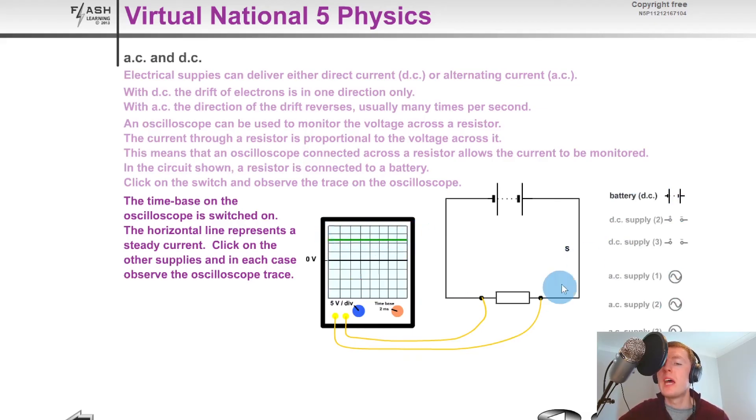However, if I open the switch and replace the DC supply with an AC supply this time, then if I close the switch, you'll see I get a wave pattern on the oscilloscope screen.